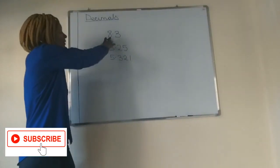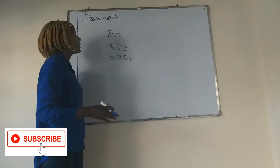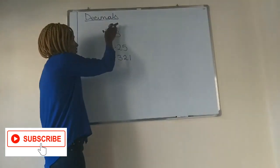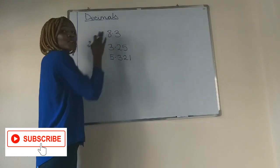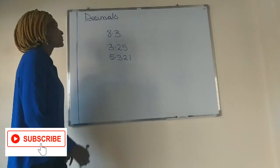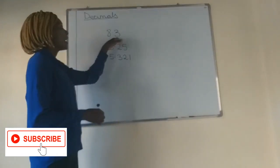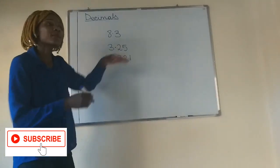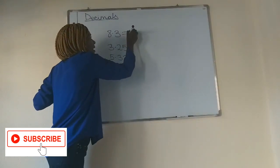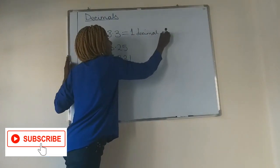When you look at the number 8.3, it's a decimal number. It means there are 8 ones and 3 tenths. Here we have one decimal place — after the decimal point there is one number, so we say one decimal place.